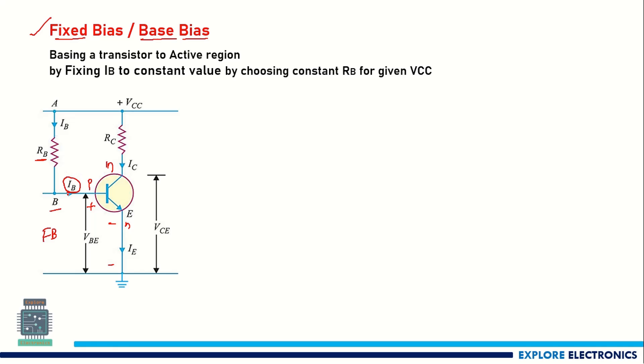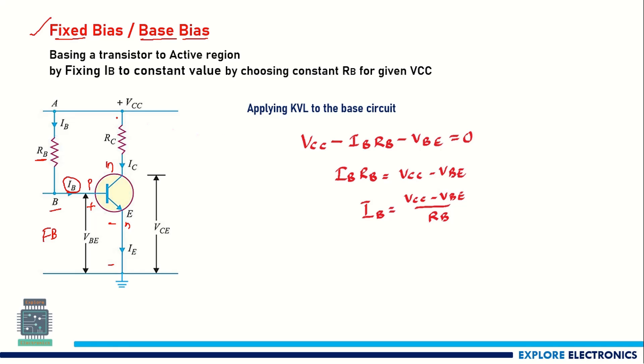This is the DC bias voltage at the base so the transistor can operate as an amplifier. Applying KVL to the base circuit — from VCC through point A, then through the base of the transistor to ground — we get: VCC − IB·RB − VBE = 0. Rearranging, IB·RB = VCC − VBE, so IB = (VCC − VBE) / RB.